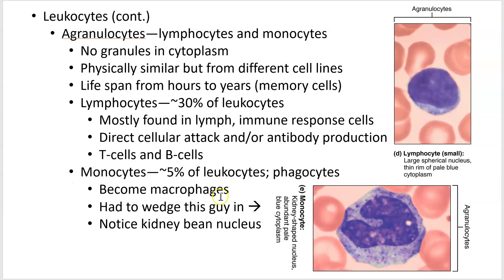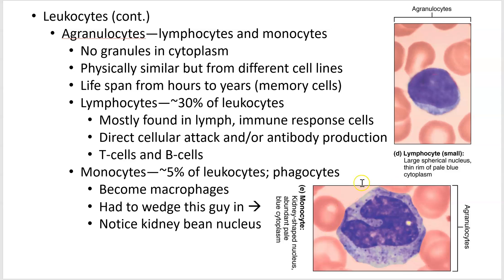Monocytes are really big cells — you can see their size compared to a red blood cell: roughly twice the diameter. They are big phagocytes that also exit the bloodstream to become macrophages. They typically have a distinctive kidney-bean-shaped nucleus, which is useful for identifying them in lab.